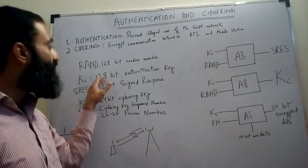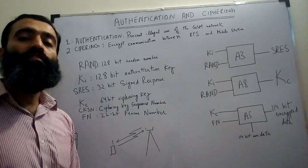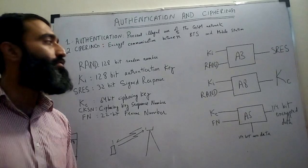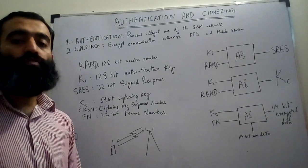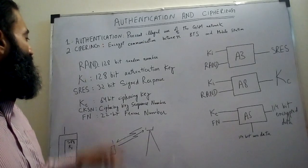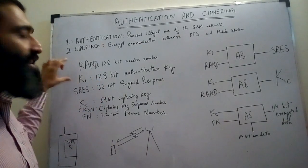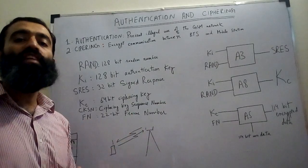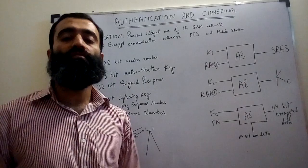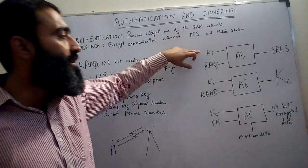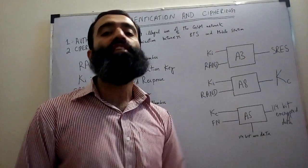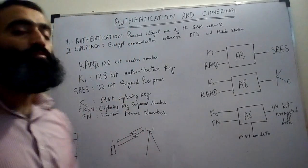Then we have the authentication key Ki. It is a 128-bit authentication key which is unique to every user and is basically burned into the SIM of the user. For security purposes, Ki never leaves the SIM and is never transmitted over the air interface. Ki and the random number are used by both the network and the mobile station's SIM in the A3 algorithm, which is used for authentication. When you input Ki and the random number to the A3 algorithm, you get SRES, or the signed response, which is a 32-bit sequence.